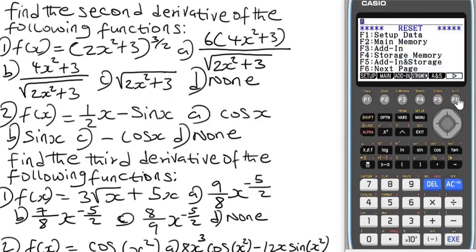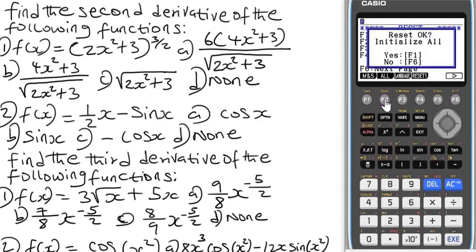Press F6 for next page. When you get there, press F2 to initialize. Press F1 — Yes — to initialize all. And then you'll see the calculator initialize as indicated. We're going to find the derivative of all the functions we have here.